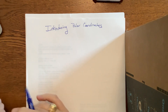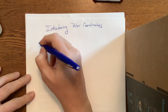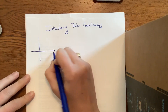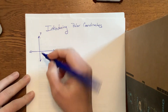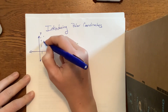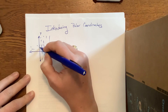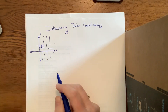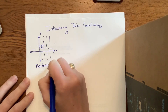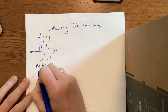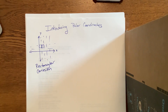In this video I want to introduce the concept of polar coordinates. What you've done your whole life is graph things on the x-axis and y-axis on a rectangular grid. This is called rectangular coordinates, or Cartesian coordinates after René Descartes. That is what you've seen your whole life.